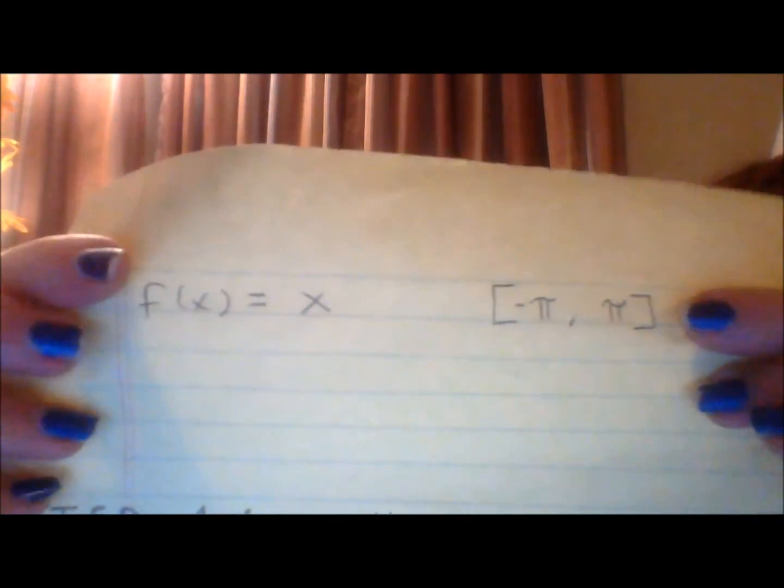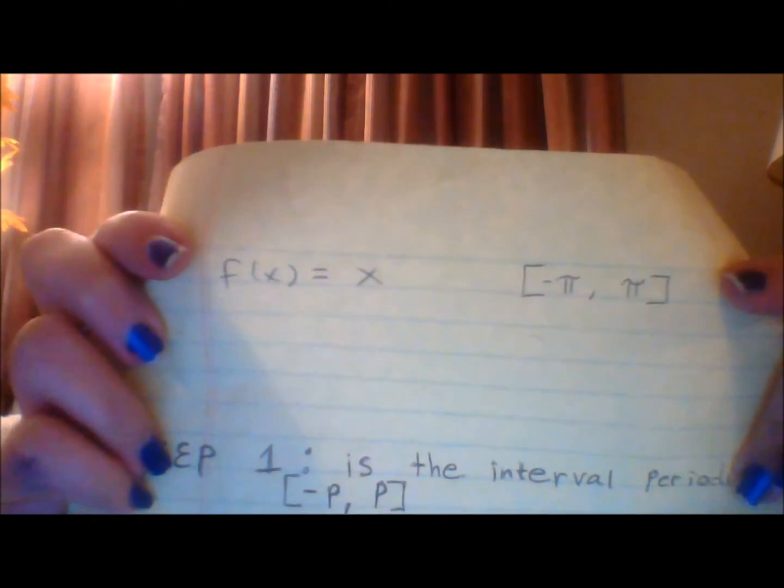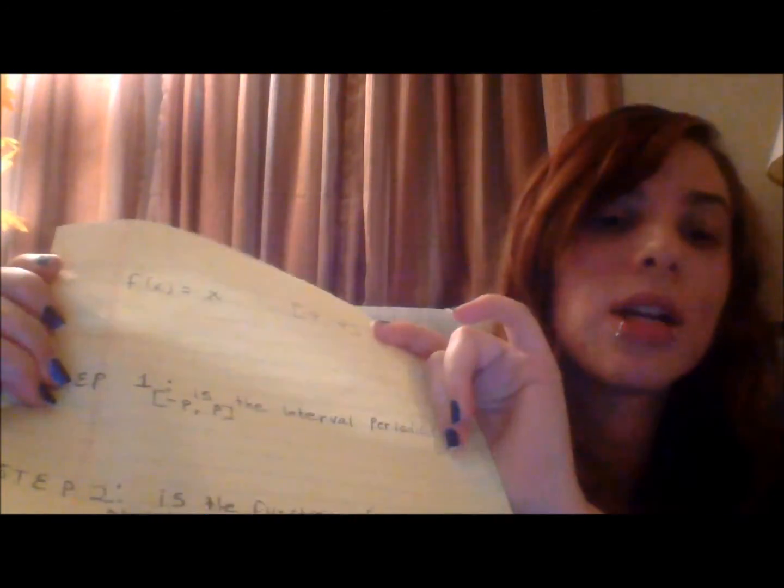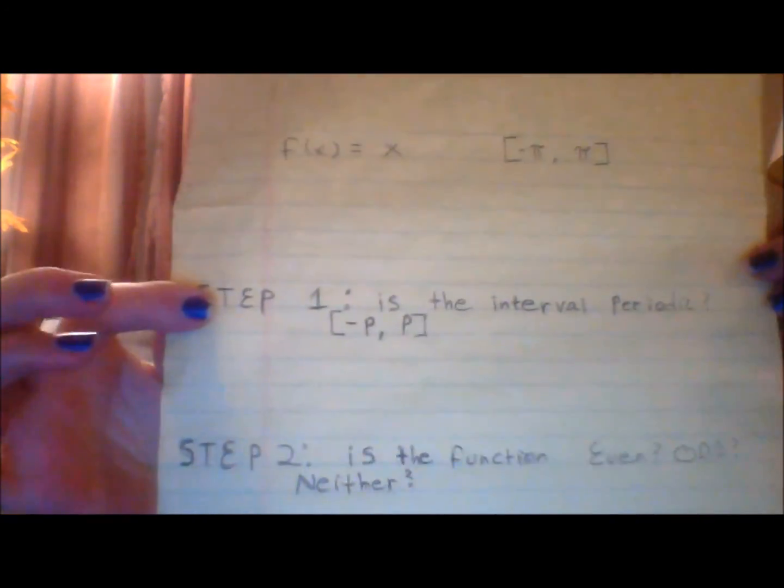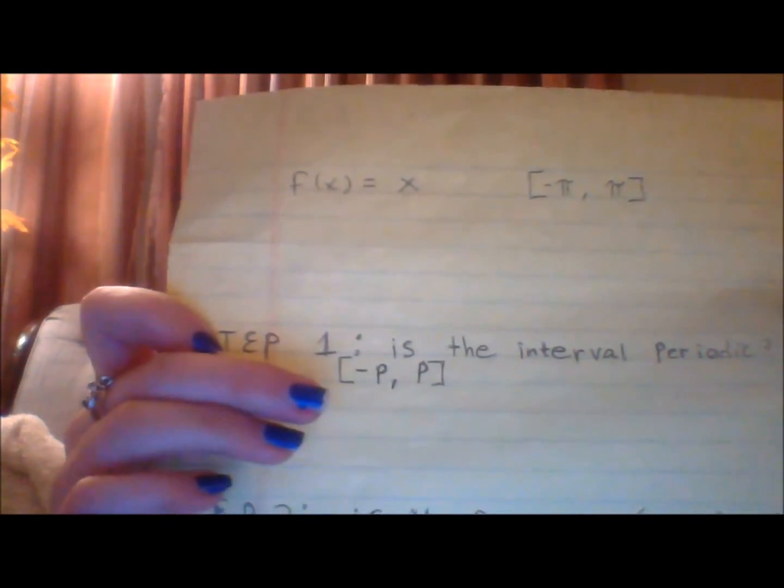I'm going to use the function x over the period negative pi to pi. The first step you want to do is check if it's on a periodic interval, like from negative p to p.